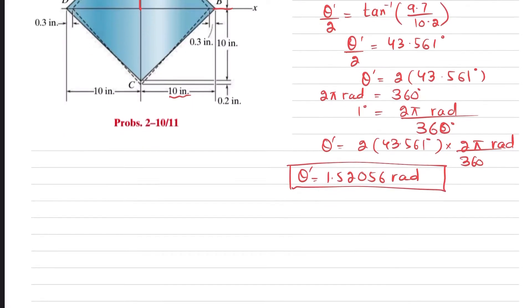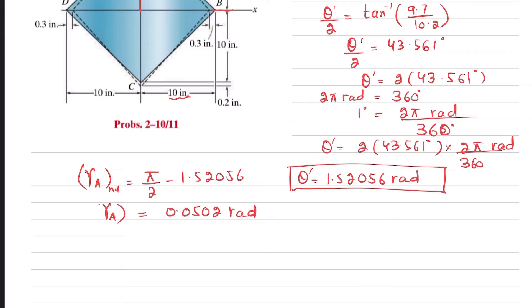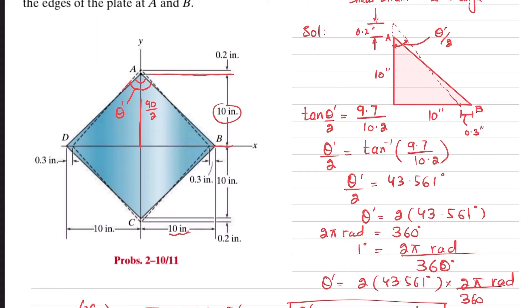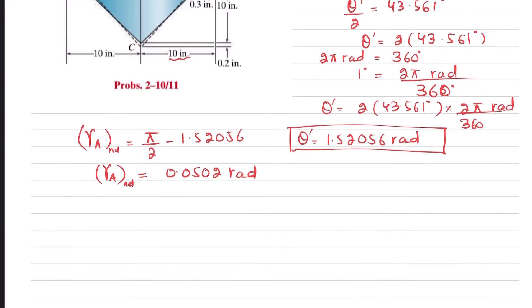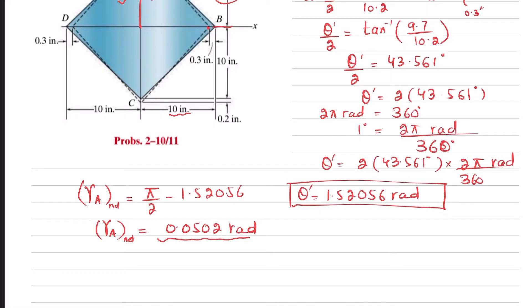The shear strain at point A is equal to π/2 minus the new angle, which is 1.52056 radians. That gives shear strain at point A equal to 0.0505 radians — wait, pi/2 minus 1.52056 equals 0.05023 radian. This is your shear strain at point A, because initially the angle was 90 degrees (π/2) and now the angle is reduced, so we subtract theta dash from π/2.